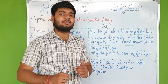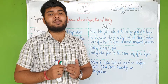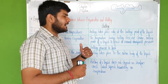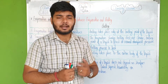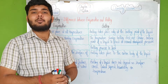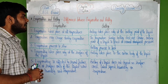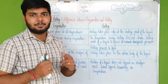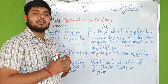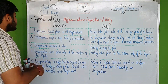Now let's study the difference between evaporation and boiling. This is a very important question — sometimes asked in exams and it's also an NCERT question. As I've told you before, whenever you answer such a question, write your answer in tabular form. I have made a table: the first column is evaporation and the second column is boiling. Let's study all the points one by one.